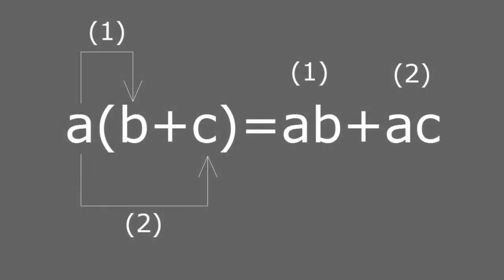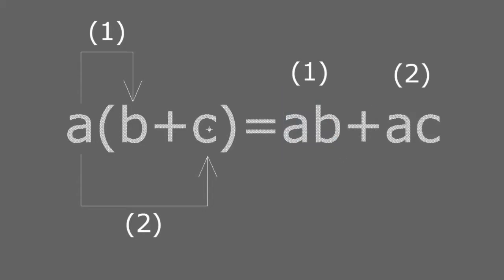Here we see how the distributive property is developed. A gets multiplied by b and goes to the other side of the equation, then I have to add to that a multiplied by c.